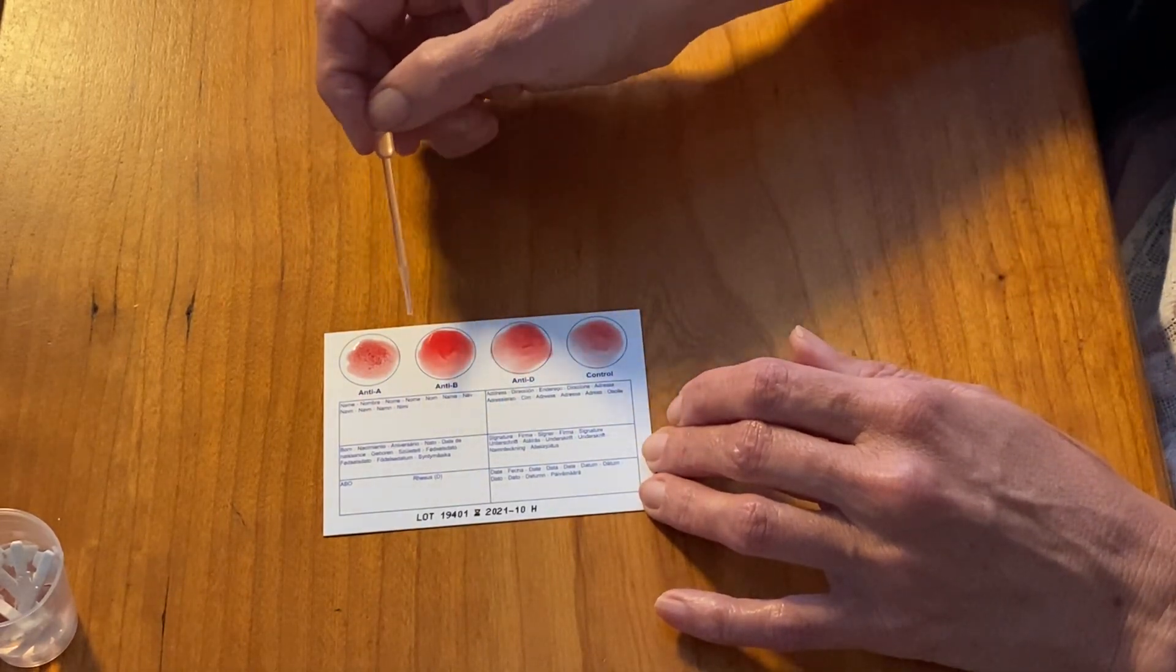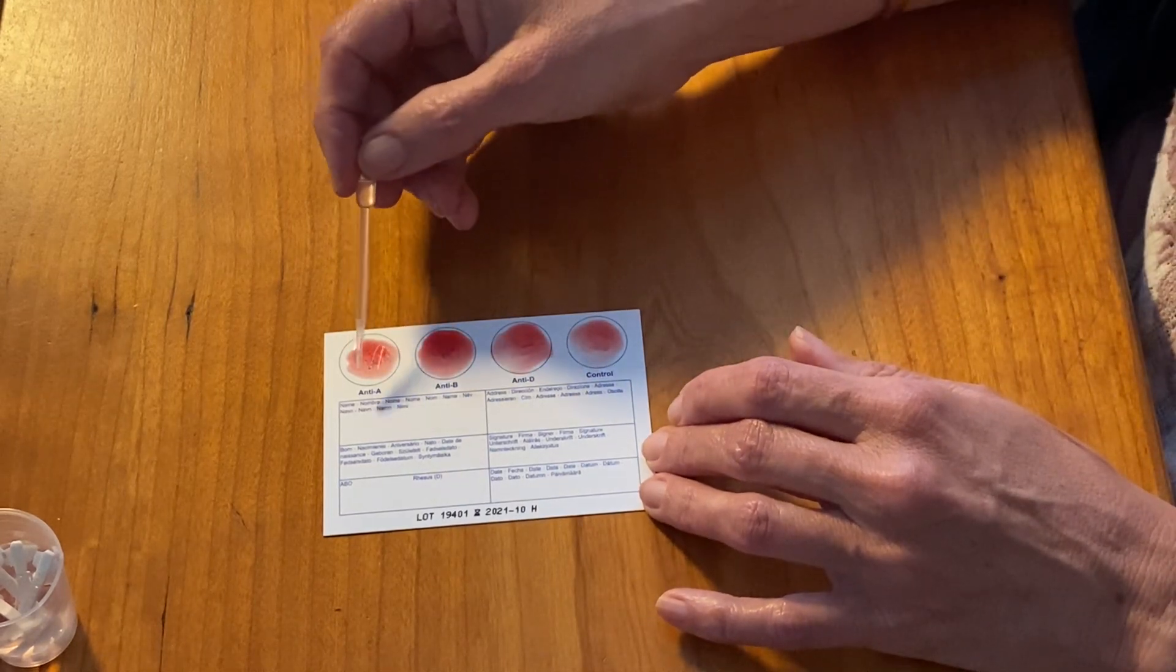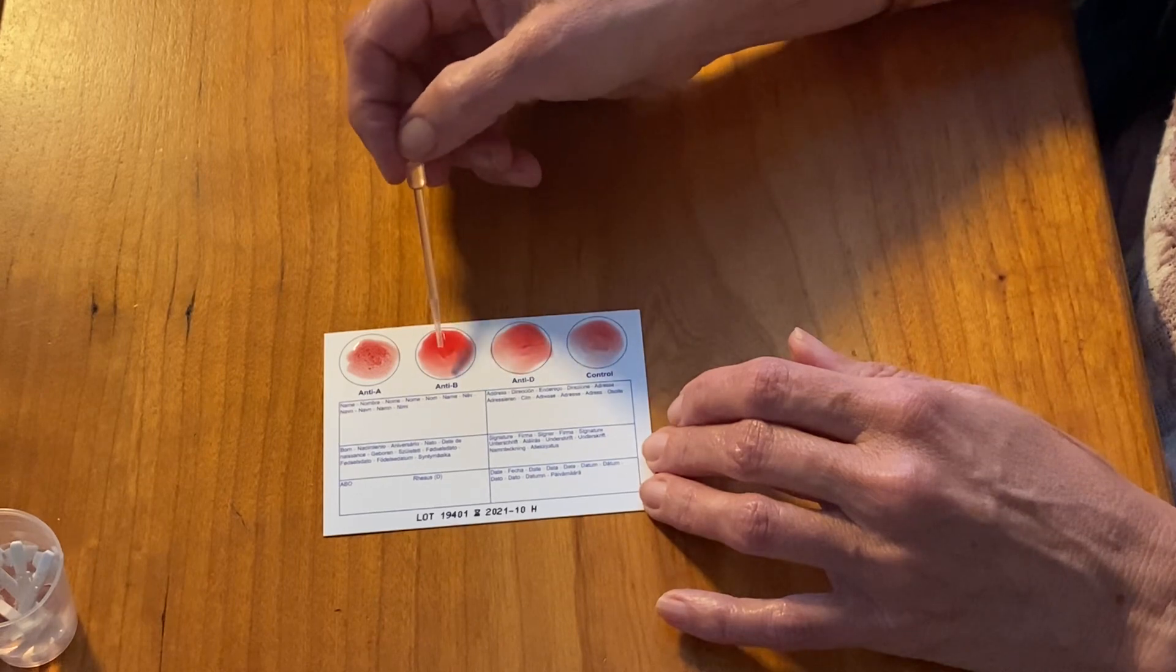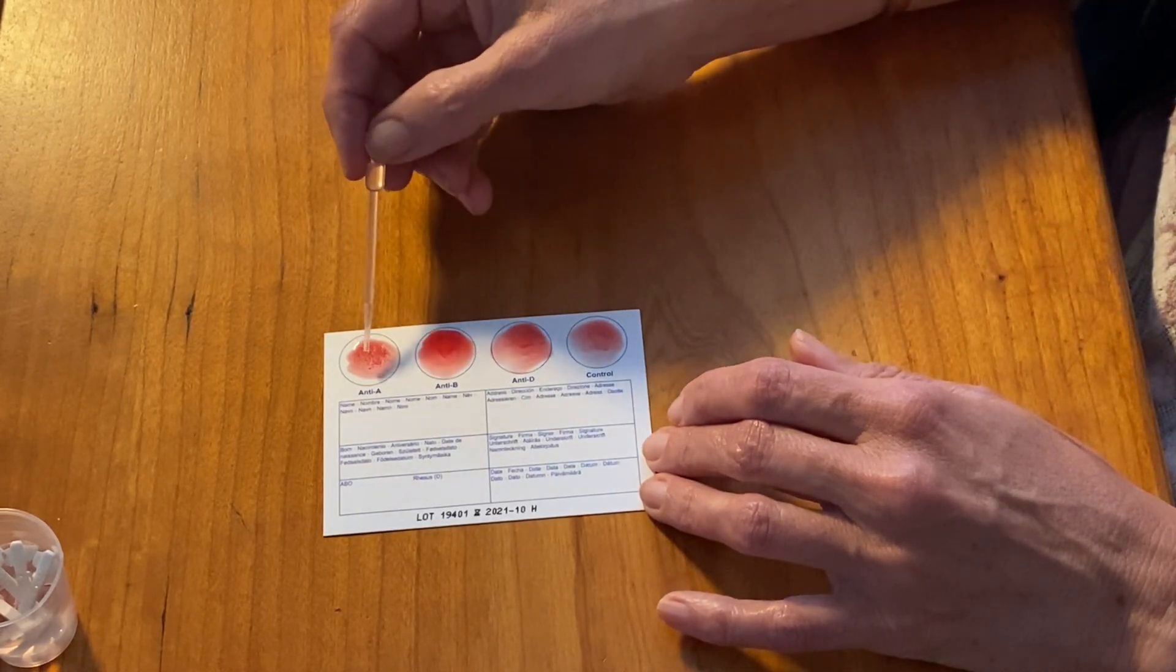If I was B this would have coagulated and this would have stayed smooth. If I was O both would have stayed smooth. If I was AB they would have both coagulated.